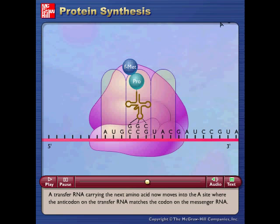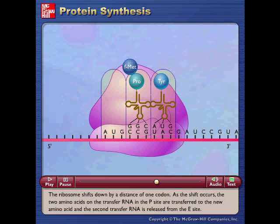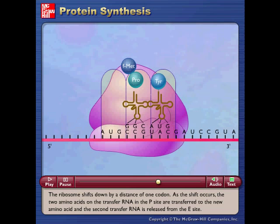A transfer RNA carrying the next amino acid now moves into the A-site where the anticodon on the transfer RNA matches the codon on the messenger RNA. The ribosome shifts down by a distance of one codon.